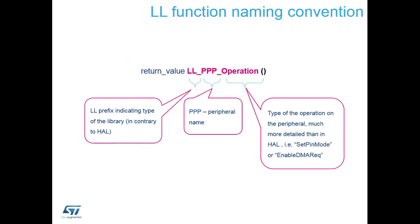The command structure of the low layer libraries follows the same format as the HAL. You have a return value if there is one, then rather than HAL you have LL, then your PPP peripheral name. There are no extended functions because low layer libraries target this device family only. The operation description is more descriptive than just start and stop — it's now things like set pin mode or enable DMA request.